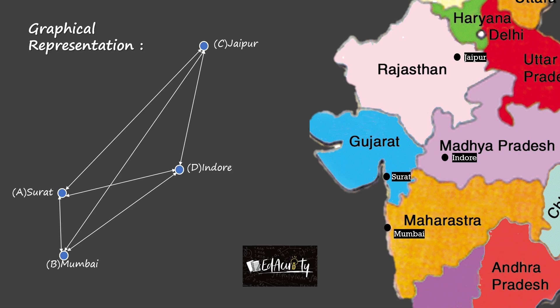You will see that each city is connected to every other city by an edge. In graph theory, where there is an edge between every pair of vertices, it is called a complete graph. In fact, any map can be converted into a graph with no more than four colors in it, such that no two adjacent regions have the same color. Interestingly, this is known as the famous four-color theorem.